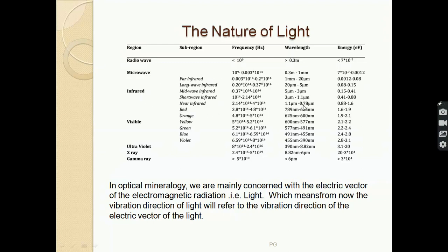As we have seen that light is composed of two vectors - electric vector and magnetic vector - we are mainly concerned with the electric vector because all the phenomena that arise during the optical studies of minerals or any other thing, that is due to the interaction between the electric vector of the light and the electronic environment within the crystal. So from now on, whenever we say the vibration direction of light, we will indicate the vibration direction of the electric vector of the light.